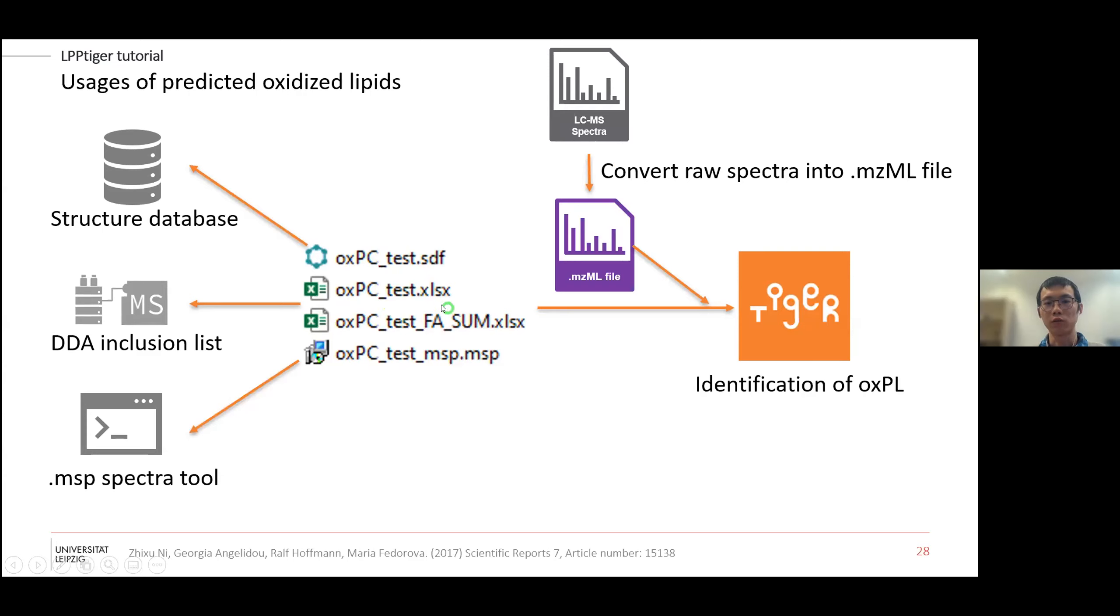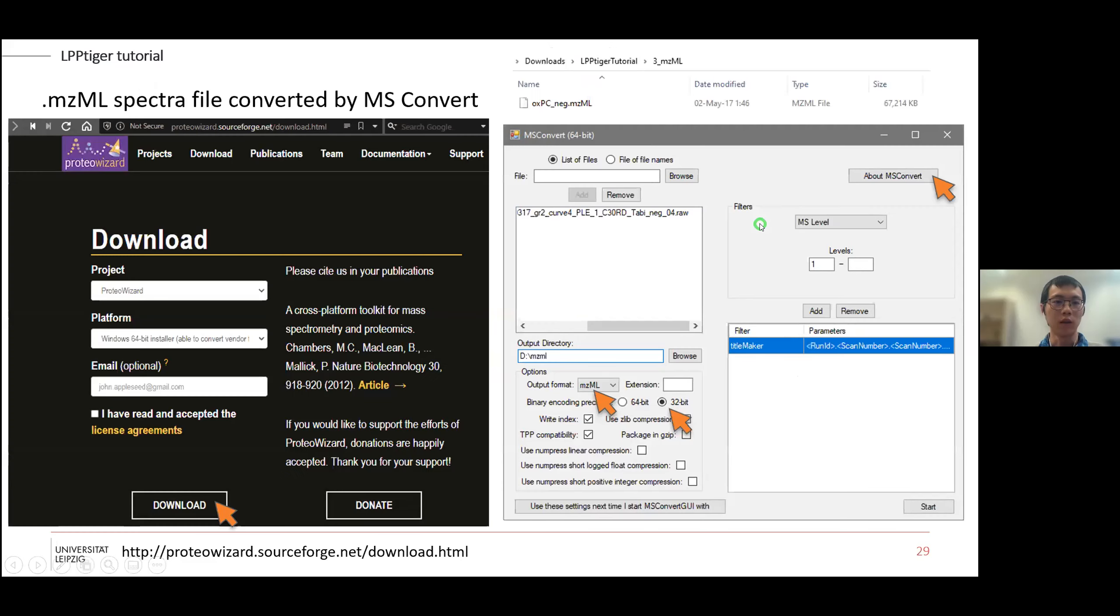Then use the identification function from LPP Tiger. LPP Tiger is designed for identification, that's why we are not able to do quantification here, but there are plenty of quantification software which you heard from previous talks. The MZML format is a common vendor-free format. You download this ProteoWizard software from the website. You select MZML and 32-bit format and then click convert. We provide you a sample MZML file in the tutorial folder.